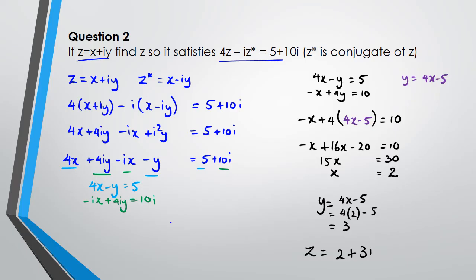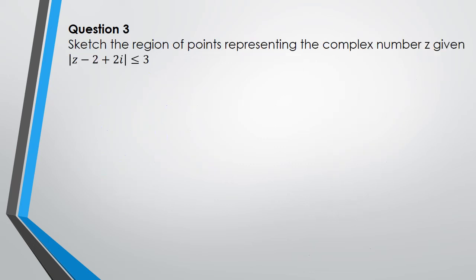Okay, that was a merit question from I can't remember which year guys, but it was a merit question. All right, let's go to the next one. All right, so in this question you were asked to sketch the region of the points representing the complex number z given by this condition here. So remember with this one, the first step you do is you write down z is x plus iy.